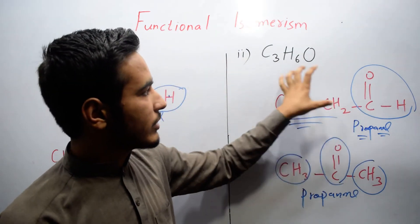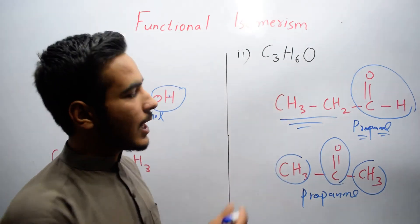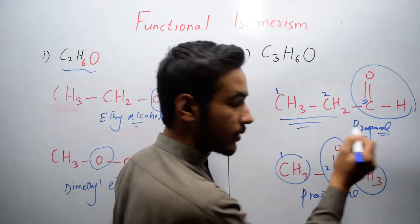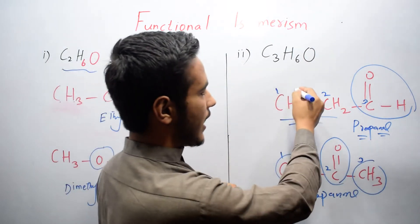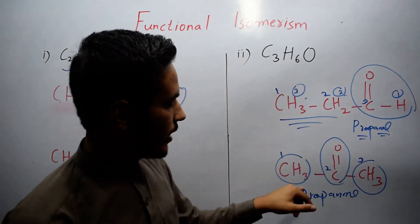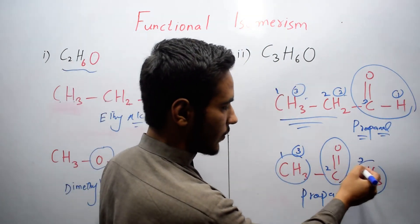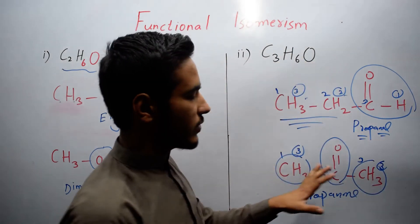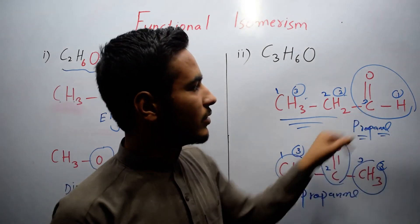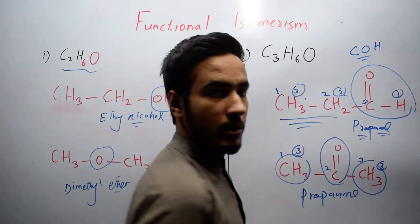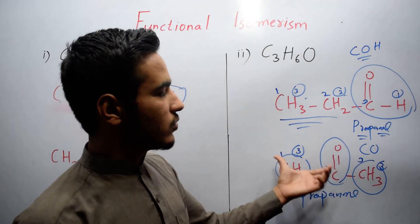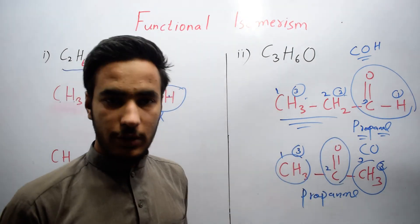Both propanal and propanone have three carbon atoms and six hydrogen atoms, confirming the same molecular formula C3H6O. The only difference is in the functional group: propanal has a C-OH (aldehyde) functional group, while propanone has a C=O (ketone) functional group. This is functional group isomerism — same molecular formula, different functional groups.